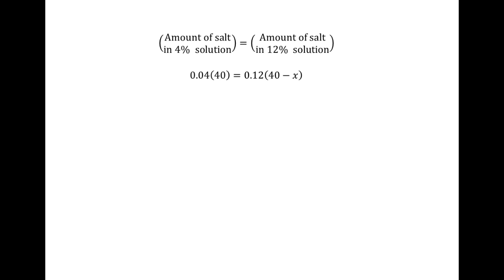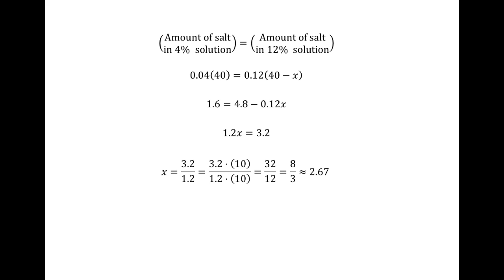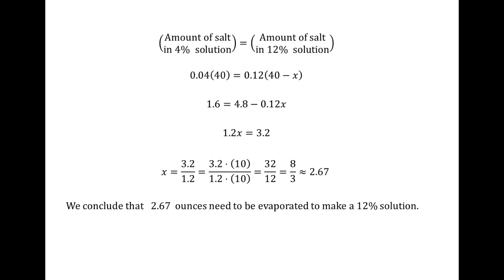Solving this linear equation, we distribute to eliminate parentheses, ending up with 1.6 equals 4.8 minus 0.12x. Rearranging gives 0.12x equals 3.2. Dividing, we get 3.2 over 1.2. Multiplying numerator and denominator by 10 gives 32 over 12, which simplifies to 8 thirds. Rounded to two decimal places, that's approximately 2.67 ounces. So we conclude we need to evaporate approximately 2.67 ounces to produce the 12% solution.